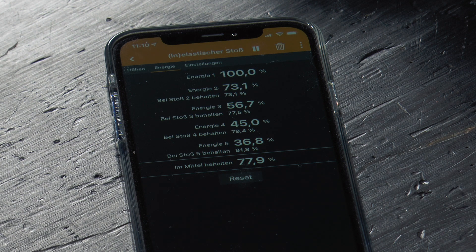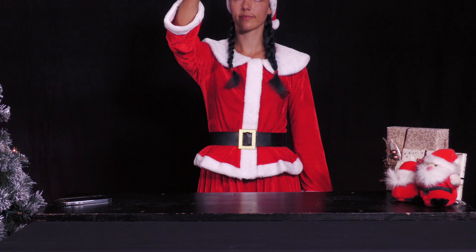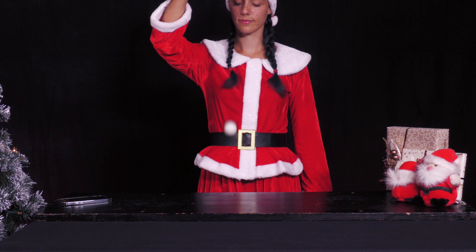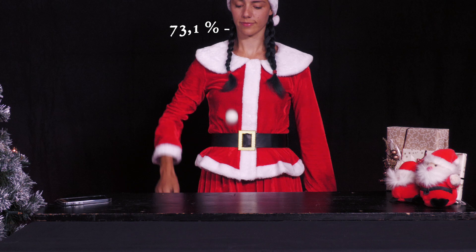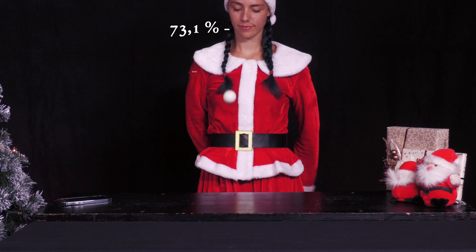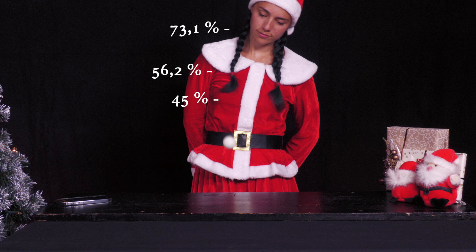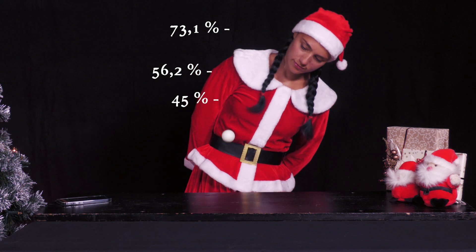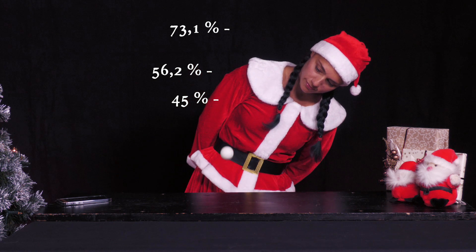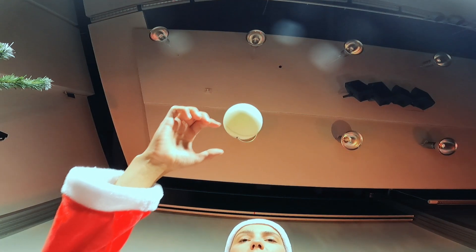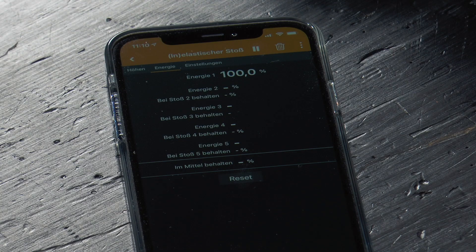When the ball hits the tabletop, it is slowed down and deformed, as with a compressed spring. The tension of the deformation can be released by the ball pushing off the tabletop again and being accelerated upwards — it bounces off the tabletop. During this process, the ball loses energy, which is emitted, for example, in the form of a sound wave, i.e., the impact noise, or by heating the ball or the tabletop.